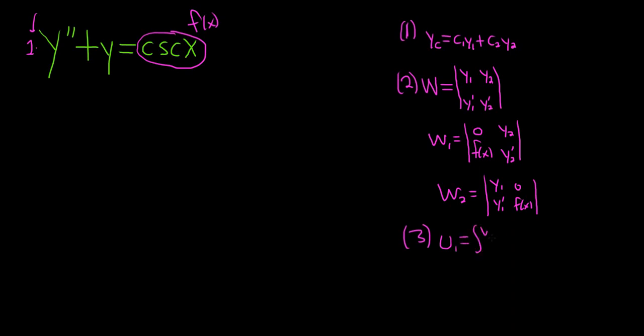It's the u's. u1 is the integral of w1 over w, and then u2 is the integral of w2 over w. This is what separates the easy problems from the hard problems. Sometimes the integration can be difficult, and sometimes it's not so difficult.